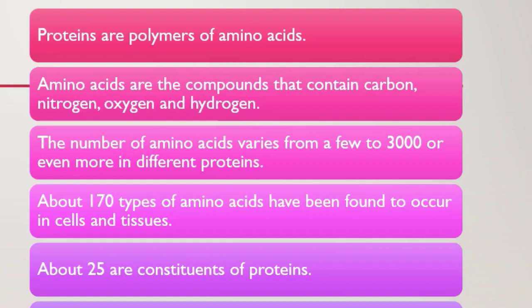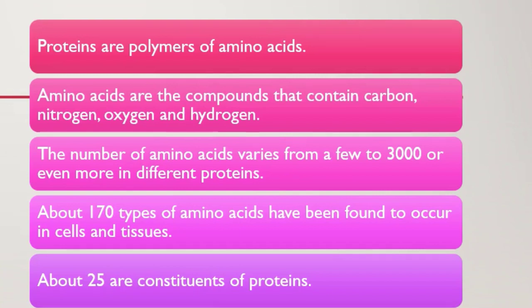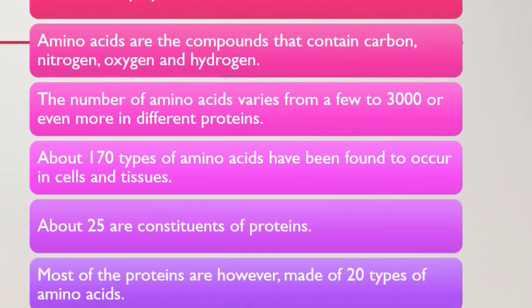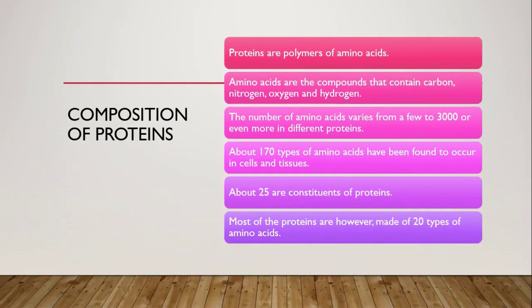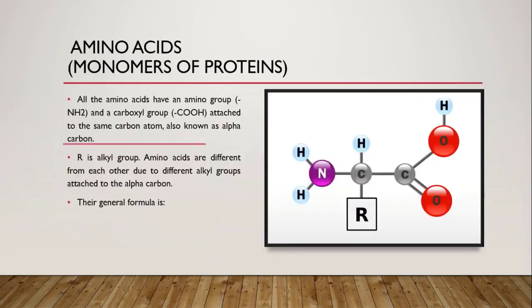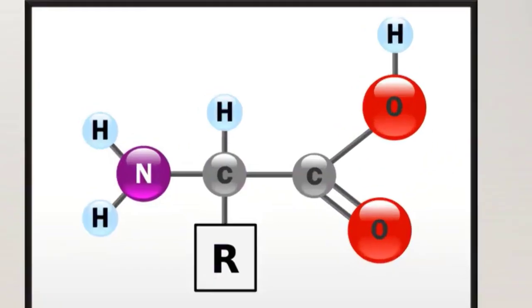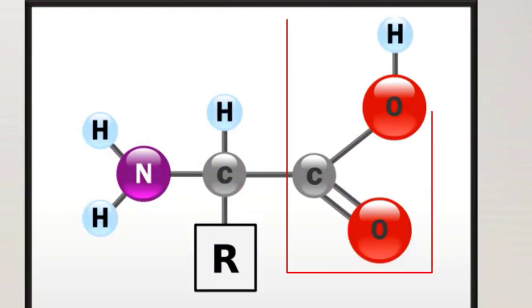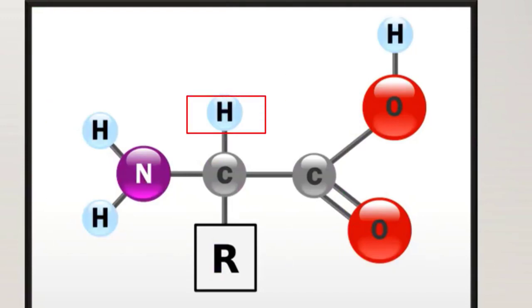Different proteins کے اندر amino acids کی تعداد different ہو سکتی ہے, and the number of amino acids varies from a few to 3000 or even more in different proteins. مختلف cells اور tissues کے اندر تقریباً 170 types of amino acids discover ہوئے ہیں.